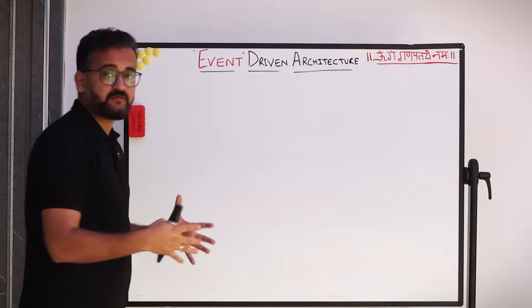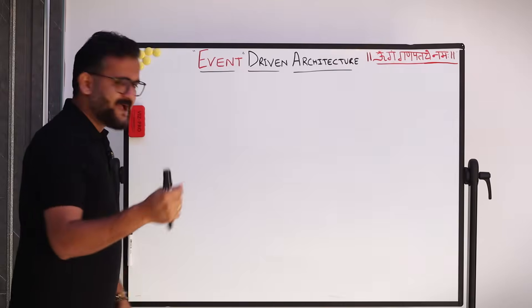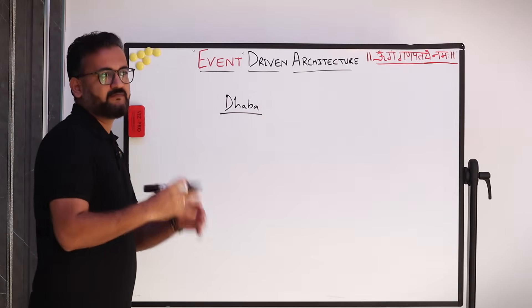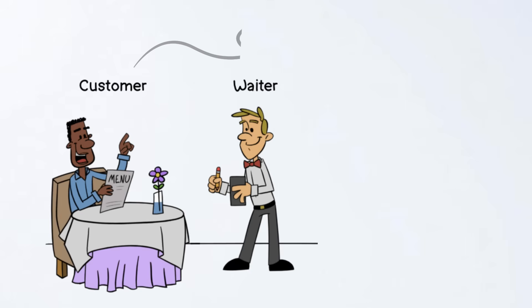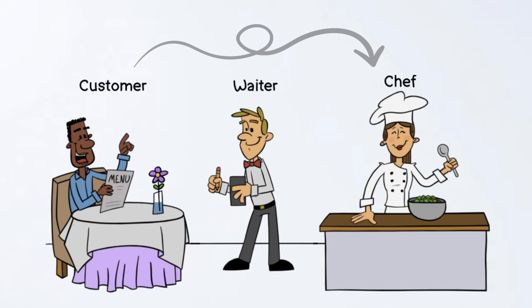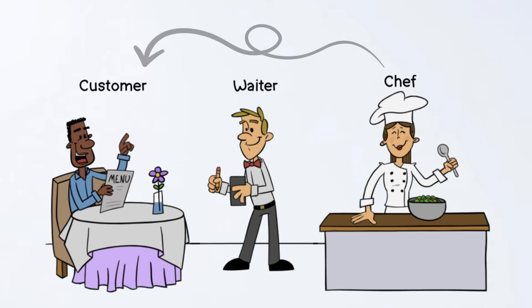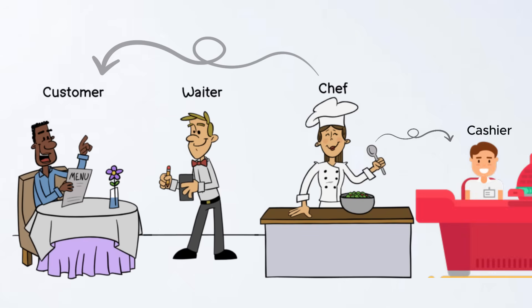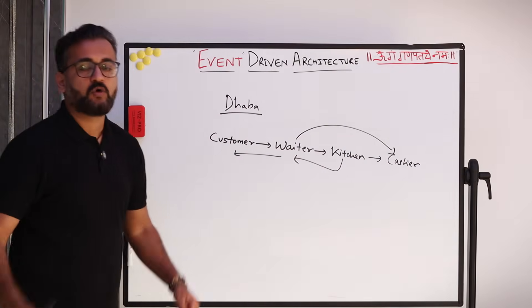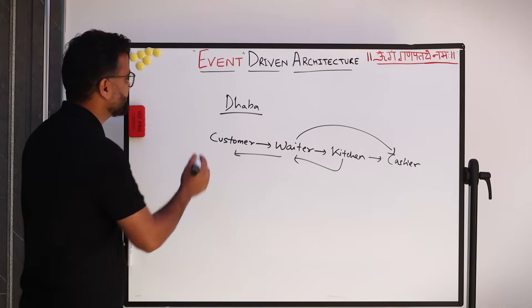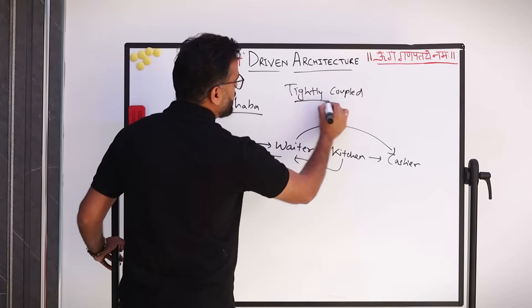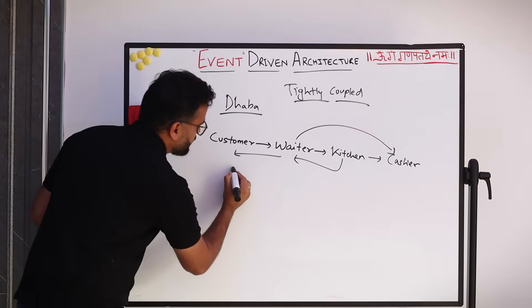Let's start with the real-life problem of a roadside dhaba. Imagine a foreign couple comes to India and wants to taste dhaba food — a restaurant on the roadside that serves Indian food. What's happening here is: the customer gives an order to the waiter, the waiter tells the kitchen staff or chef, they start preparing food, then it's served back to the customer through the waiter, and the waiter also has to go tell the cashier what was ordered. This is called a very tightly coupled system, working on the request-and-response model.